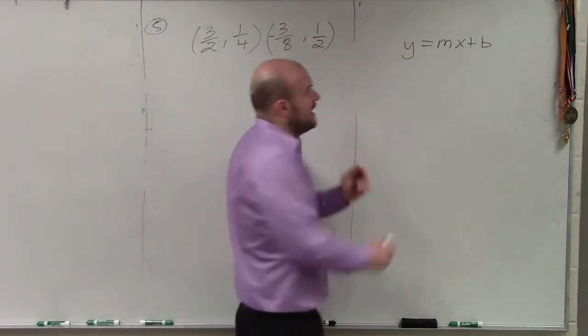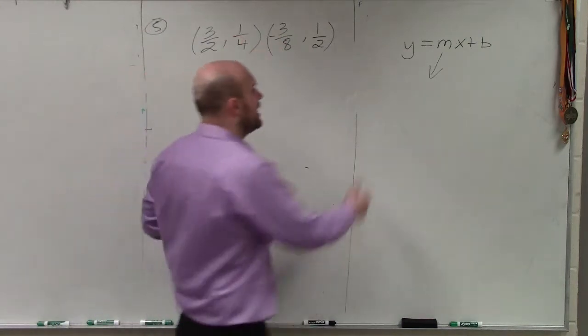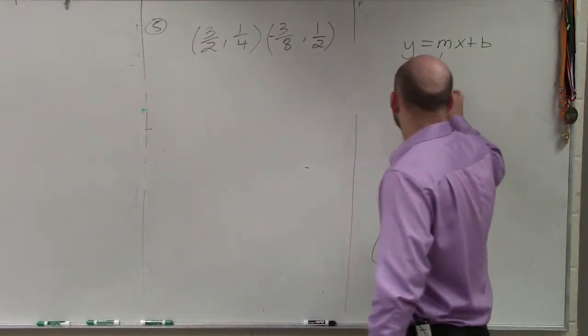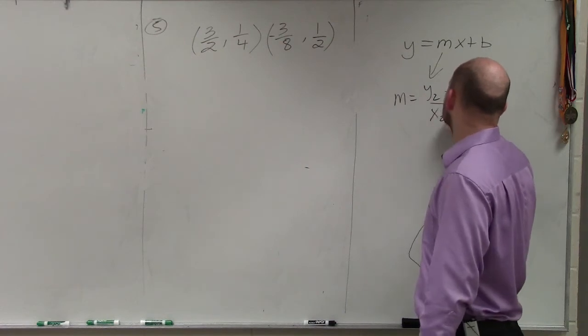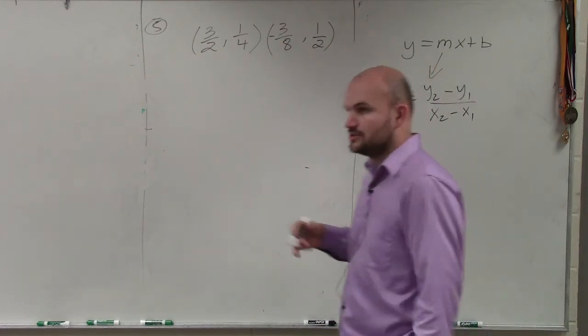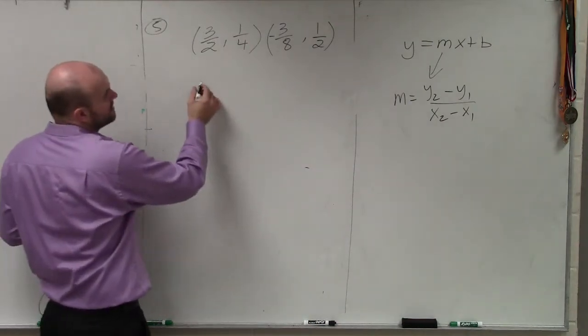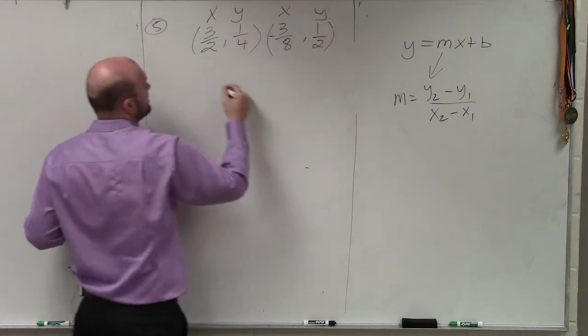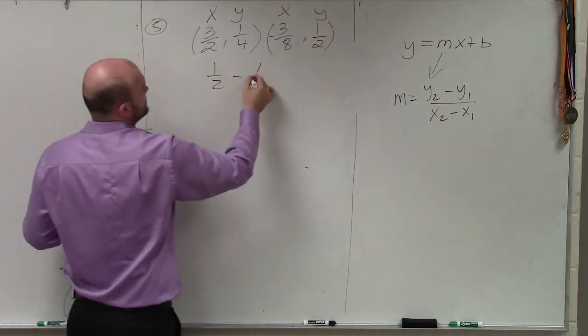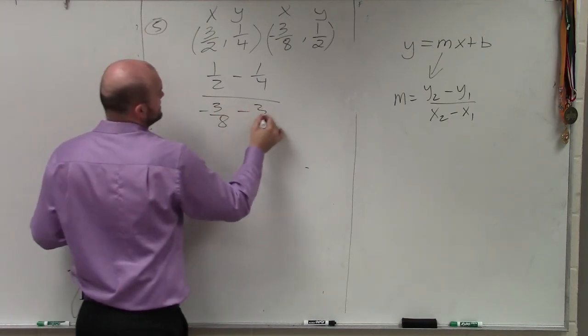So I know the next thing is determining the slope. Well, neither of these points are the slopes. However, I do know using the slope formula I can identify what the slope is. Just the change in the y-coordinates over the change in the x-coordinates. So therefore, in this case, the change in my y-coordinates, I have x, y, x, y. So I have 1 half minus 1 fourth divided by negative 3 eighths minus 1 half.